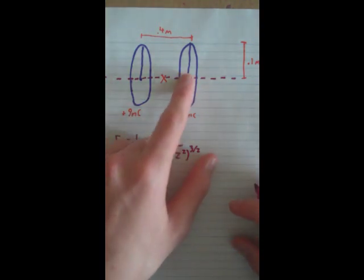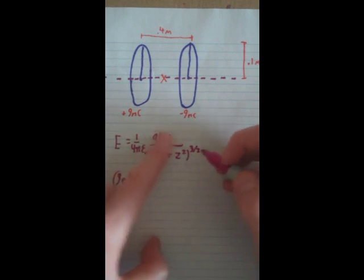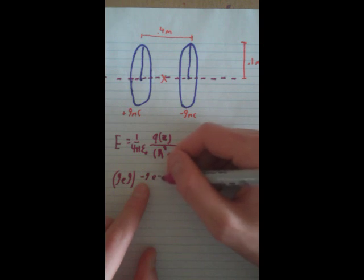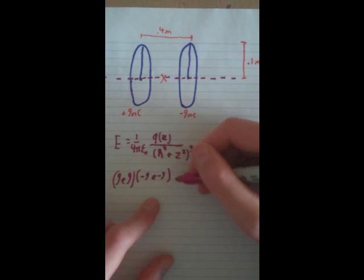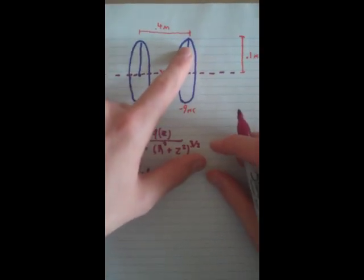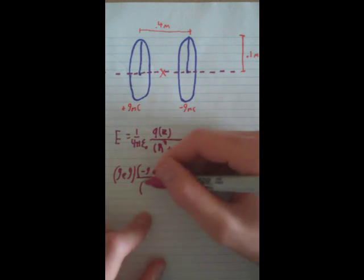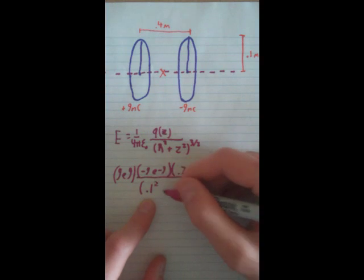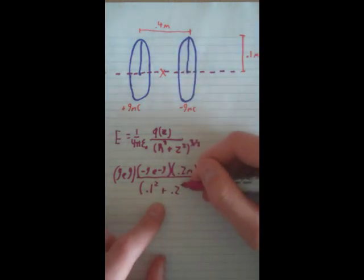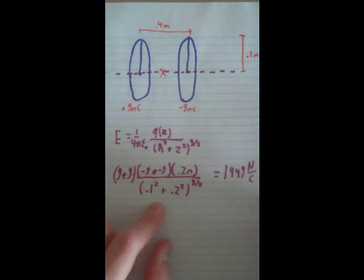Let's do our negative loop first. Our constant is 9×10⁹, times Q, which is −9×10⁻⁹ coulombs (converting nanocoulombs to coulombs), times Z. In this case Z is 0.2, because it's halfway between both loops — if they're 0.4 apart, we take half, so 0.2 meters. All of that over (0.1² + 0.2²) to the power of 3/2. Once you do all that math, it ends up equaling 1449 newtons per coulomb.